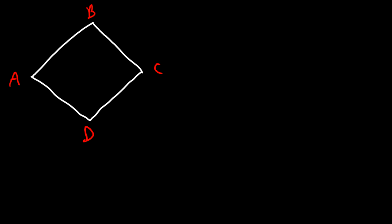Another way to prove it's a rhombus without proving it's a parallelogram first is if you can show that the diagonals are perpendicular bisectors of each other. Calling the intersection point E, you have to show that there is a right angle and also that AE and EC are congruent, and BE and ED are congruent.